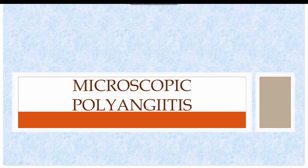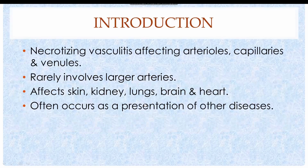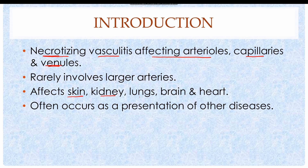The next topic in the section on vasculitis is microscopic polyangiitis. Microscopic polyangiitis is a necrotizing vasculitis affecting the arterioles as well as capillaries and venules. The disease might also often involve the larger arteries. Microscopic polyangiitis is also known as hypersensitivity vasculitis and it most commonly affects the skin, kidneys, lungs, brain, and heart.